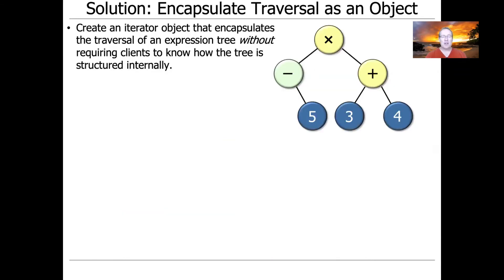So what we're going to do instead is we're going to make something called an iterator, which will be an object that encapsulates the traversal of an expression tree, without actually requiring the client code that uses the expression tree to know how the tree is structured internally. So instead of hard coding things, or instead of revealing the implementation details, we abstract away from that and treat this as a separate object altogether.